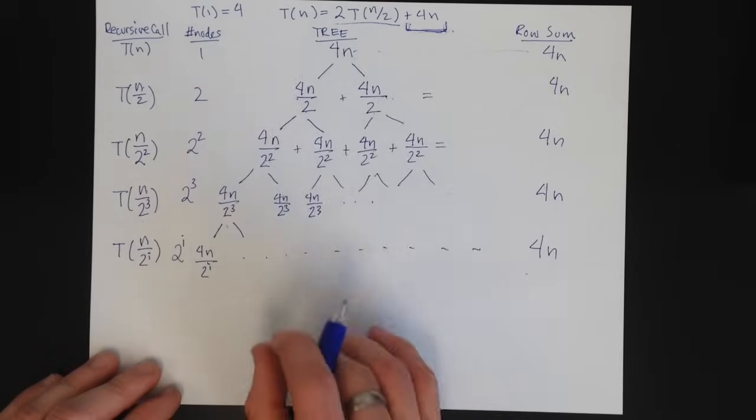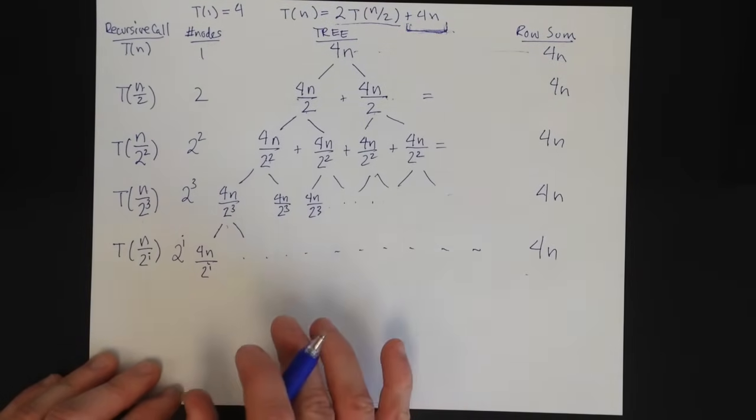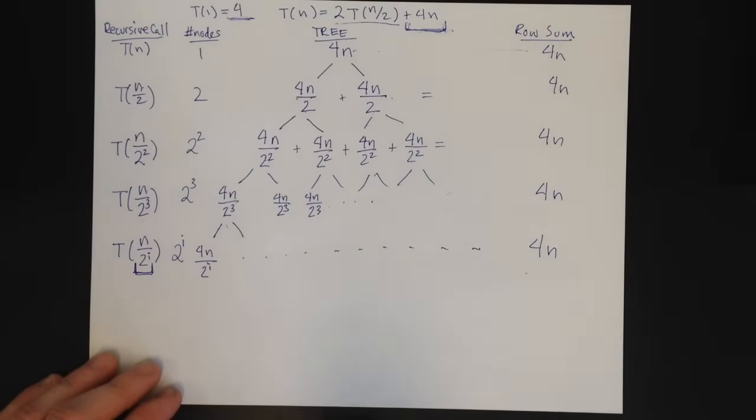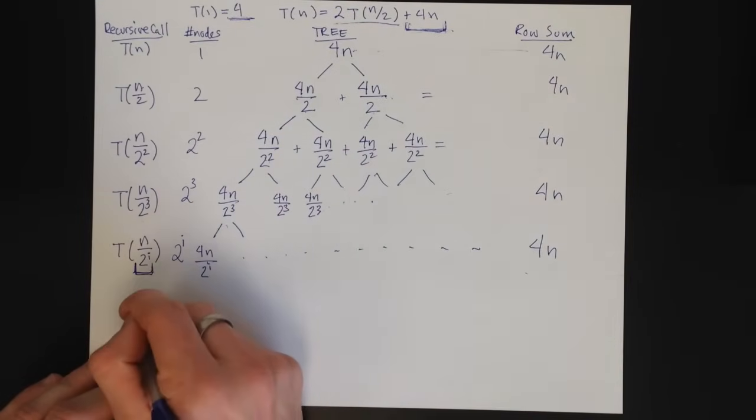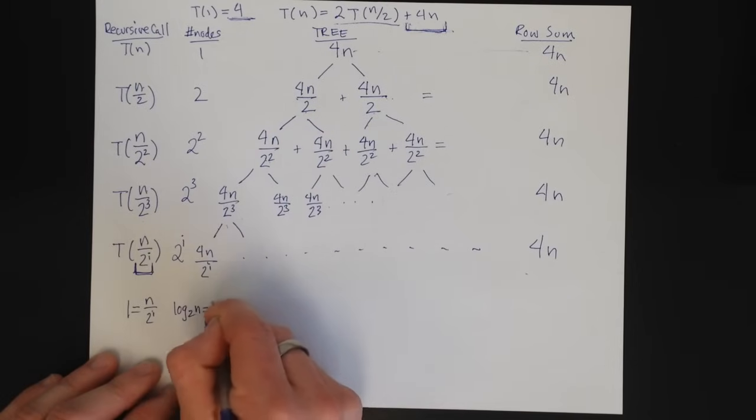Okay, so far so good. So this tells me how to build the tree. And the question is, when do I stop? And it's the same answer as before. I stop when I get to a base case, because at a base case, I don't need to expand anymore. So when is this a base case? This is a base case when 1 equals n/2^i, which as we saw before, means that log base 2 of n equals i.